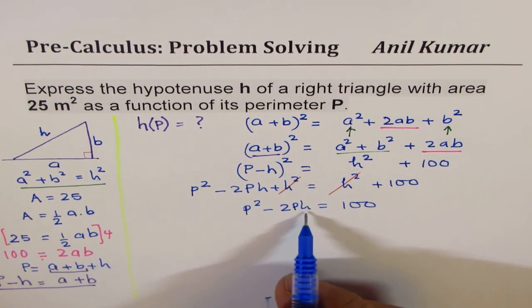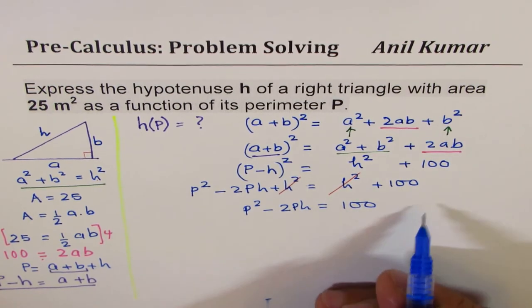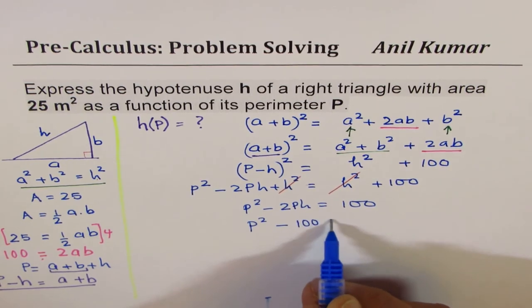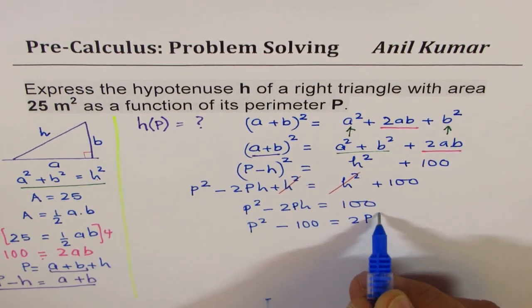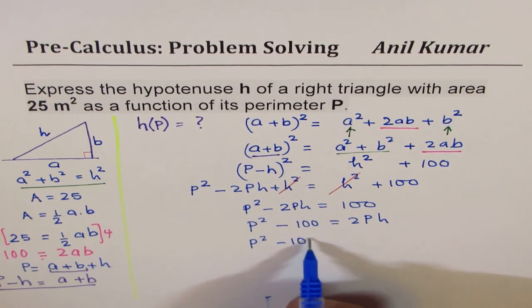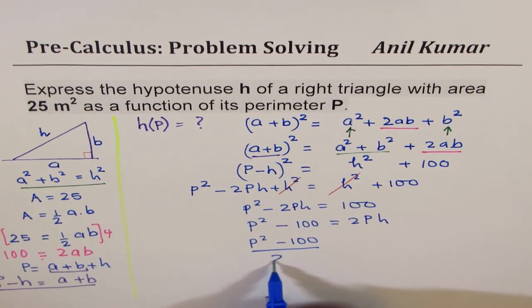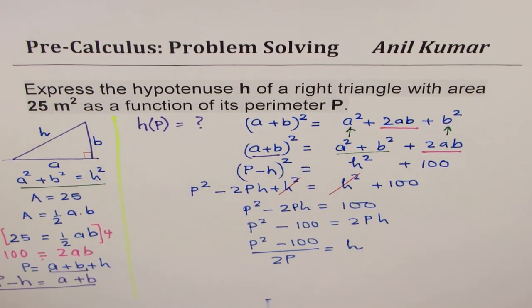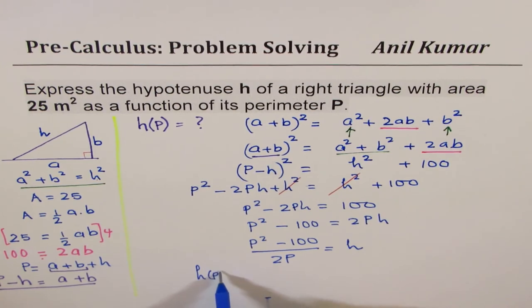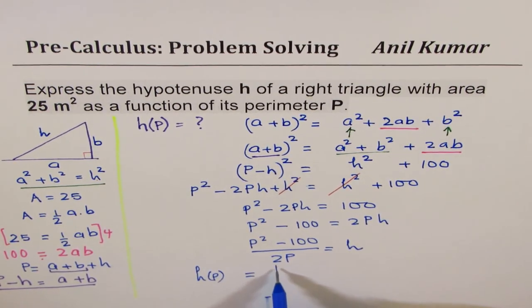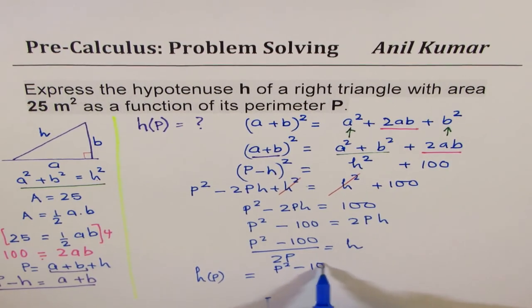We need to isolate h. So we'll bring this to the right side and say p square minus 100 is equals to 2ph. Divide by 2p. We get p square minus 100 divided by 2p equals to h. Do you see we got a relation? So we can write this as h as a function of perimeter, as equals to p square minus 100 divided by 2p.